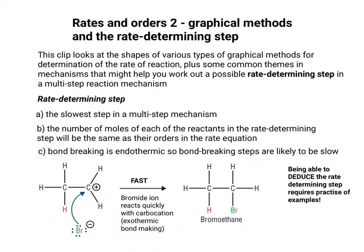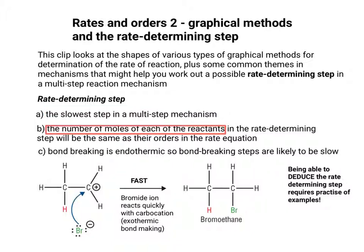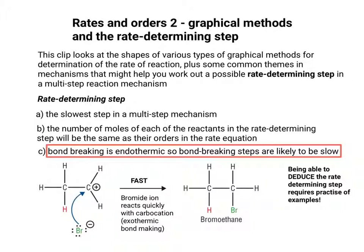To recap: first of all, the rate-determining step is the slowest step in your multi-step mechanism. The number of moles of each of the reactants in the rate-determining step will be the same as their orders in the rate equation. And finally, because bond-breaking is endothermic, any bond-breaking steps are likely to be slow and therefore found in the rate-determining step.